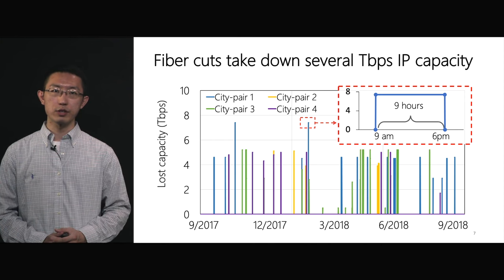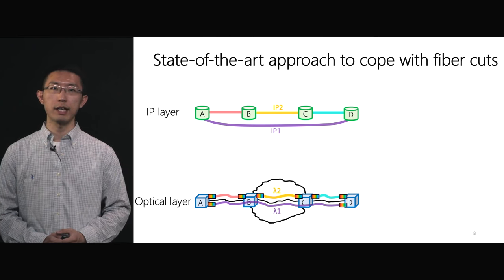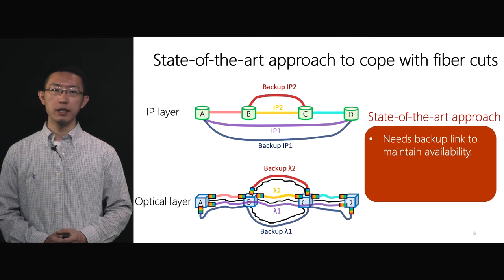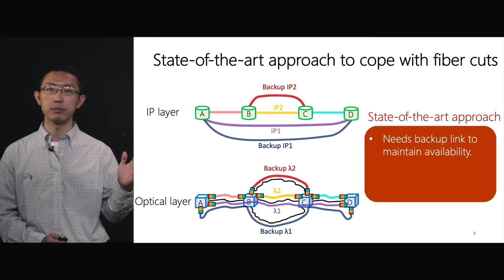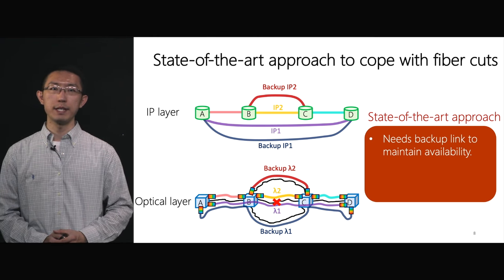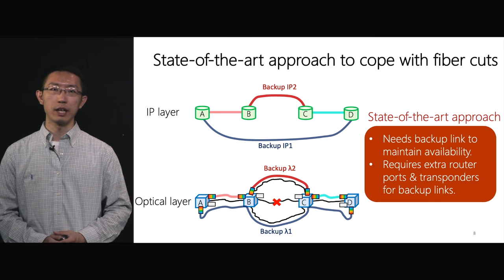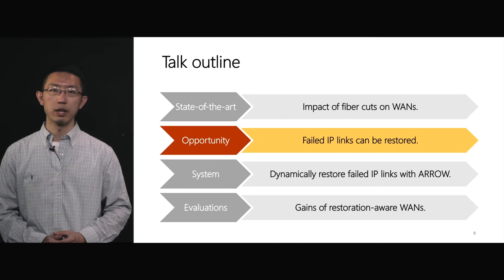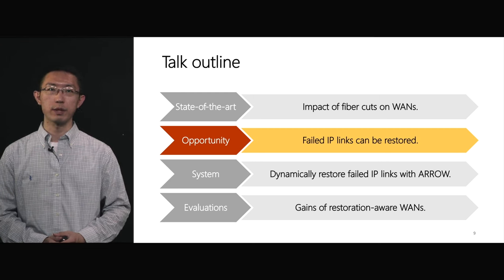The question is, how do we solve this problem? The state-of-the-art approach to cope with fiber cuts requires adding backup links. On this four-node topology, to handle fiber cuts and avoid traffic loss, the state-of-the-art approach adds redundant wavelengths — backup lambda 1 and backup lambda 2 — on the optical layer to create backup IP link 1 and backup IP link 2. In this case, when fiber BC is cut, the network is still available. However, this approach requires redundant network hardware like router ports and transponders, making it very inefficient.